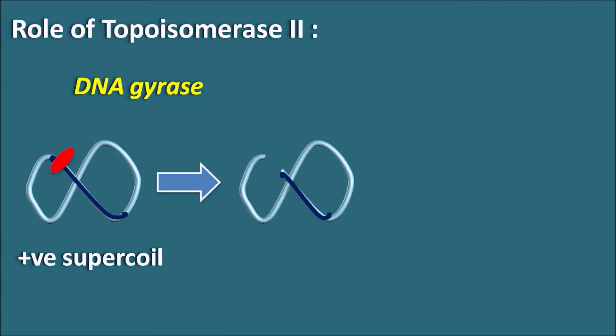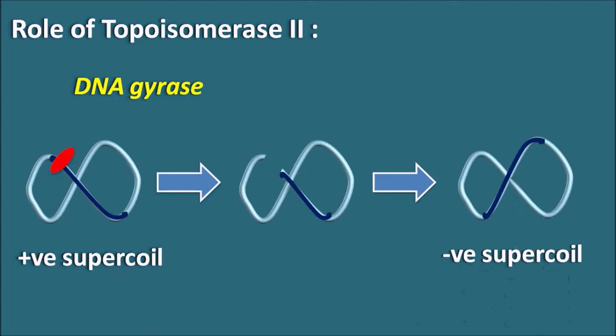Once the supercoil is cleaved, it can be rotated and resealed in the reverse direction, which produces the negative supercoil. The negative supercoil is the relaxed form of the DNA and the positive supercoil is the strained form, where topological strain present during DNA replication is relieved by DNA gyrase. So DNA gyrase has three functions: it will cut the DNA, rotate the DNA, and reseal the DNA.